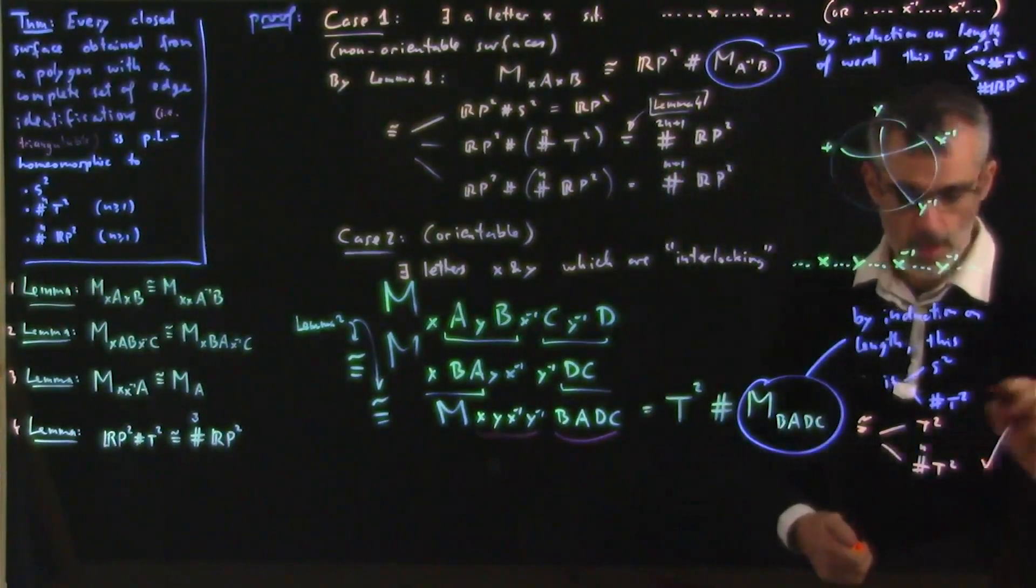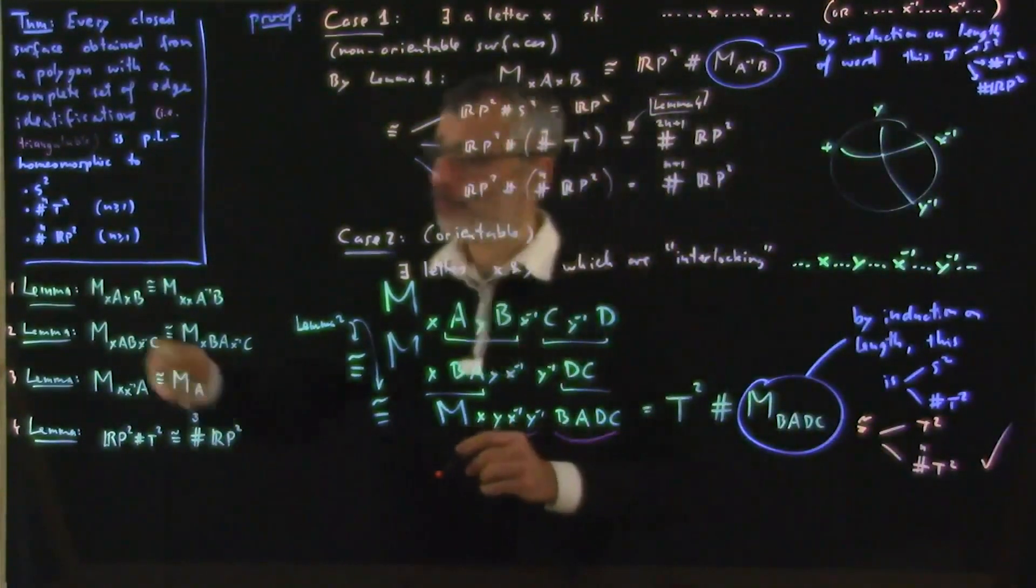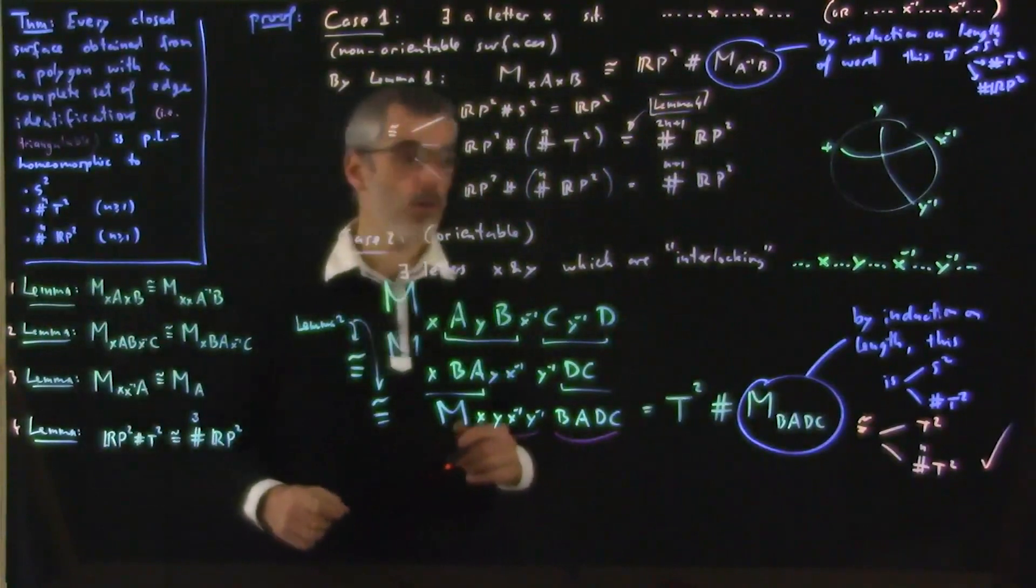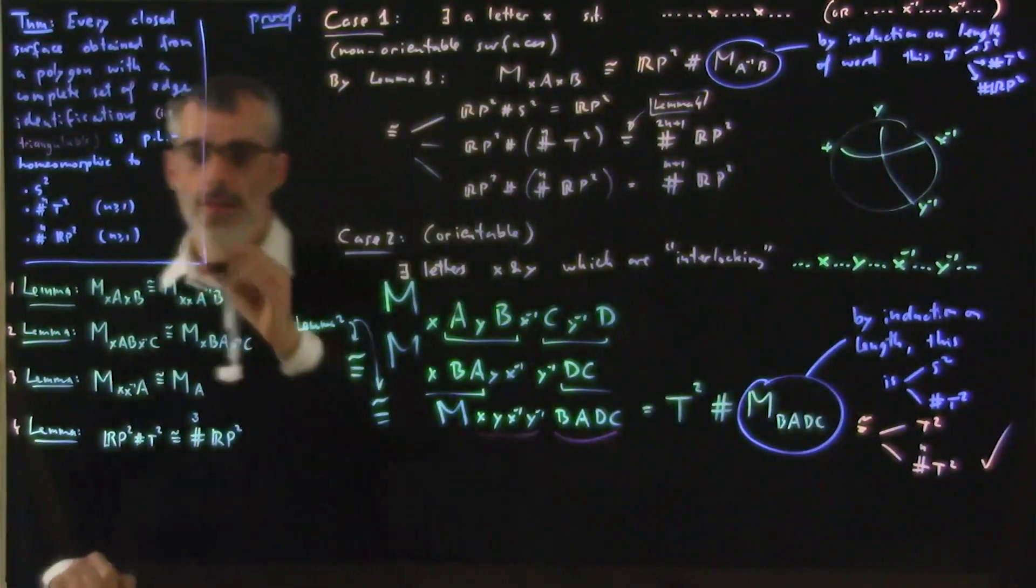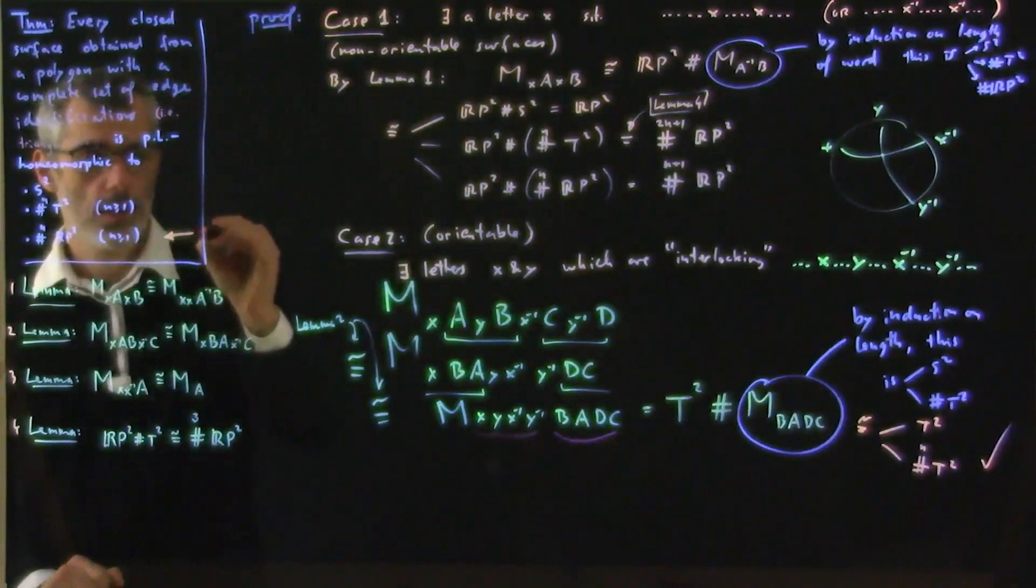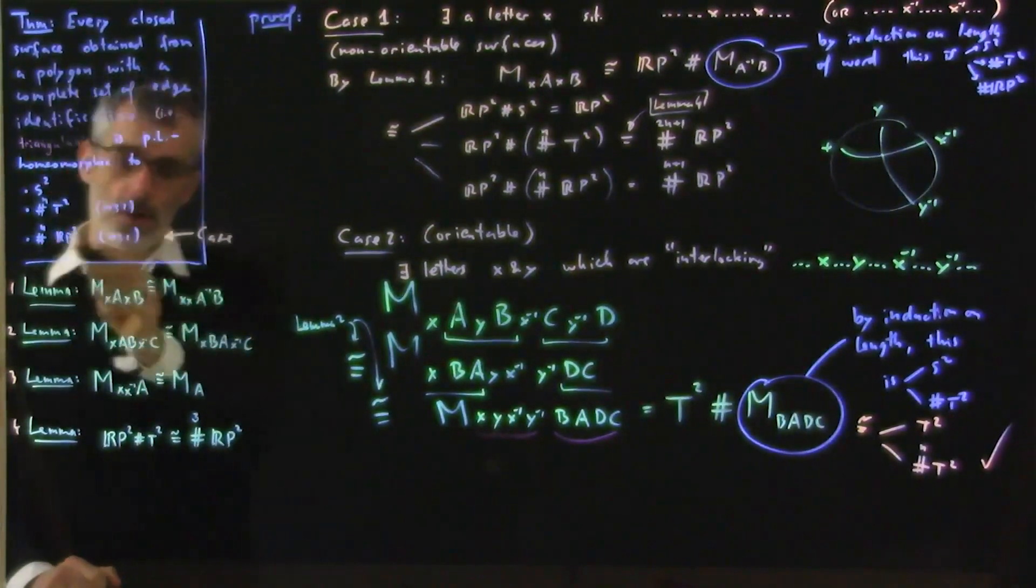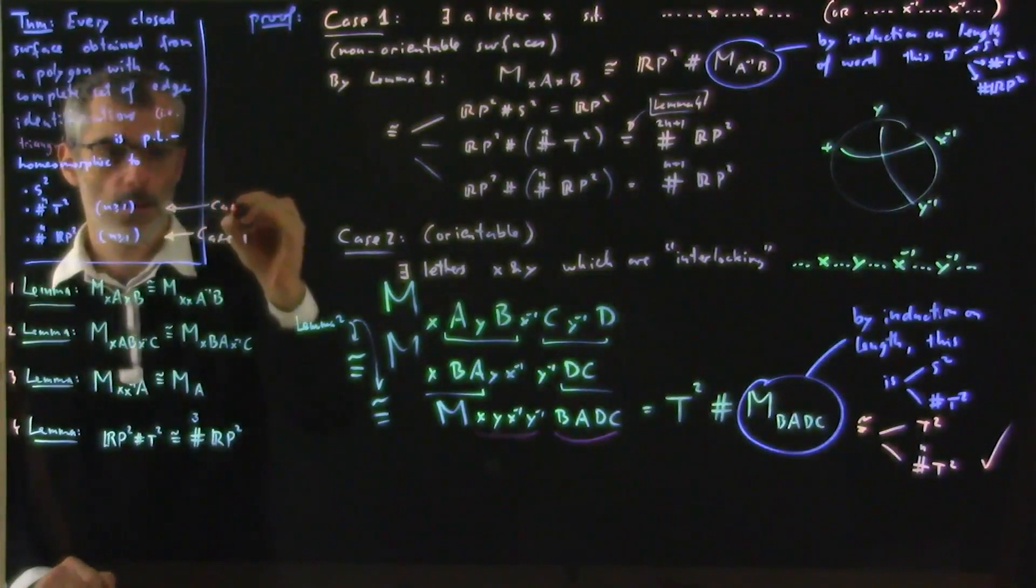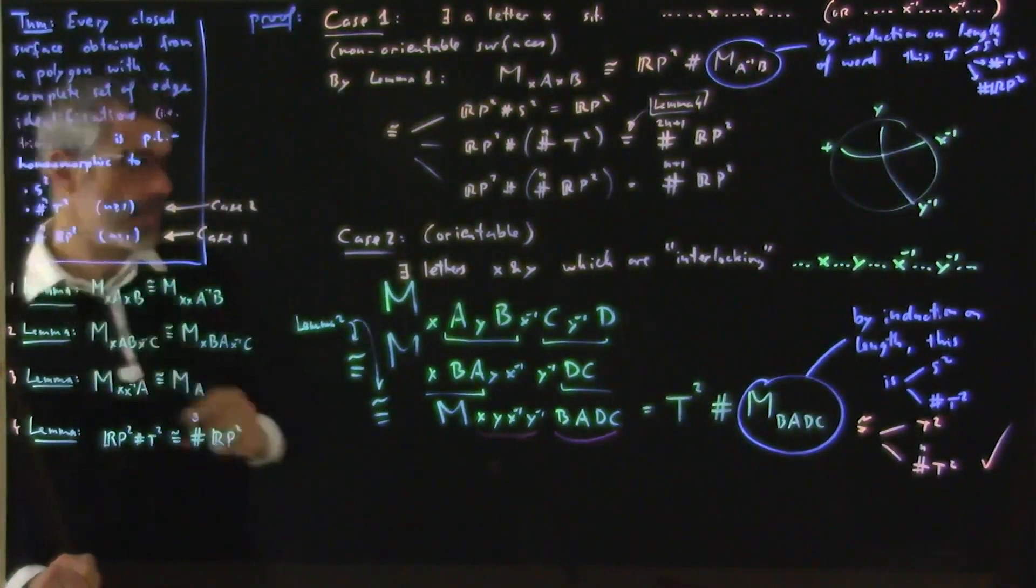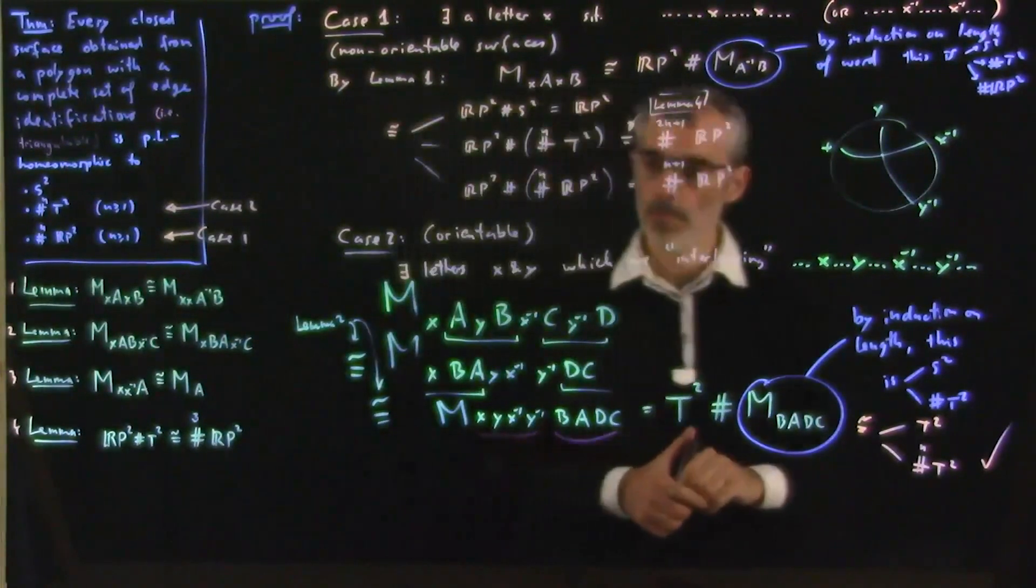So this is either T^2 or a bunch of T^2s. And so, great. Or again, well, so here, in case 1, we found that we are one of these. In case 2, we found that we're one of these.